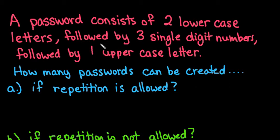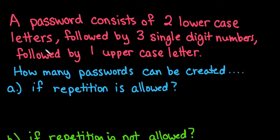For this video, we're going to look at how many different password combinations we can make with the following criteria: a password consists of two lowercase letters followed by three single-digit numbers followed by one uppercase letter. For lowercase letters, we're using the US alphabet with 26 letters. Since we're talking about single-digit numbers, zero through nine, there are ten total single-digit numbers.